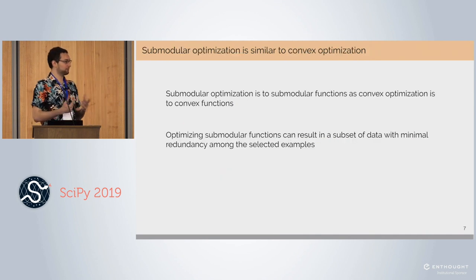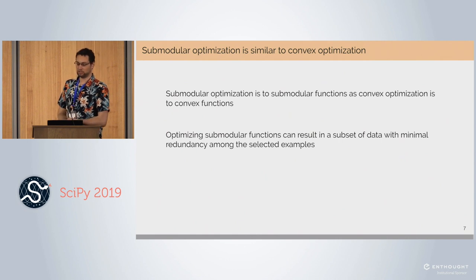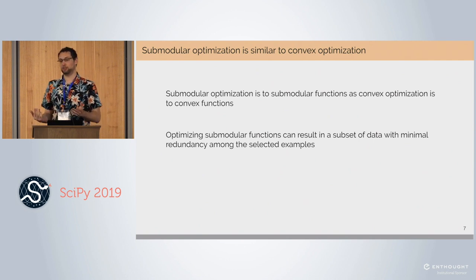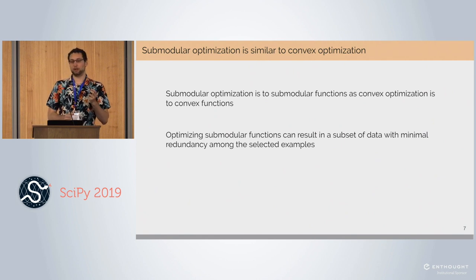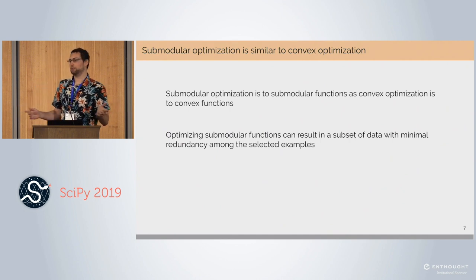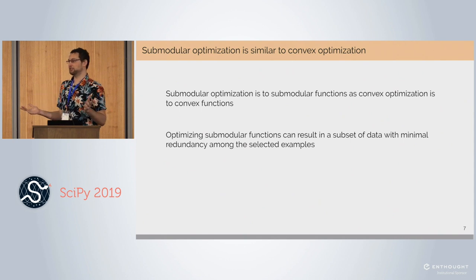Submodular optimization is very similar to convex optimization. Just as convex optimization is to convex functions, submodular optimization is to submodular functions. Convex functions help us tune the weights in our machine learning models to get the best performance. Submodular functions, on the other hand, operate on sets — they tell you how good a particular set is. By optimizing a submodular function, you are choosing the best set. Apricot focuses on the case where you have a massive dataset and want to reduce it to a subset that minimizes redundancy.